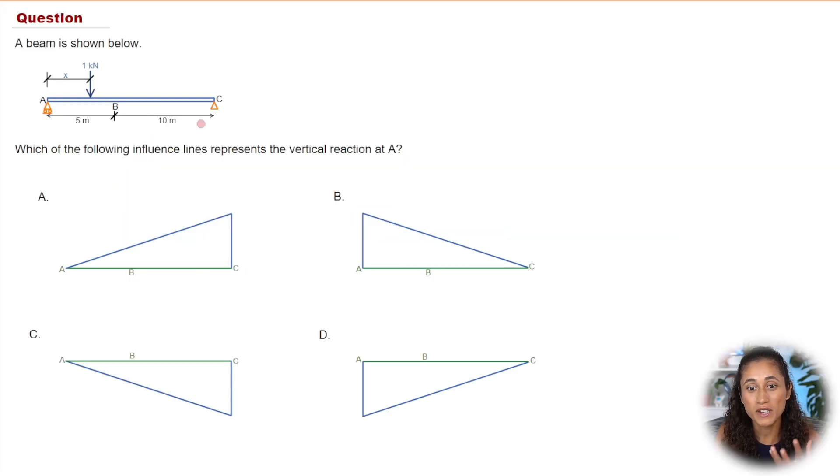So in this problem, we are given a beam and we have a unit load that is moving along the beam and we want to find the influence line that represents the vertical reaction at A. Now, before we start solving this problem, make sure to review the concepts on influence line here.